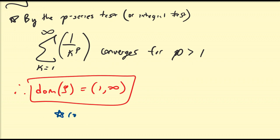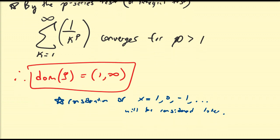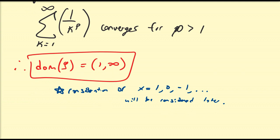Just a quick note: consideration of x equals 1, 0, negative 1, and so on will be considered later. You may be asking why we would consider values where the function isn't defined. This is not an intuitive thing to discuss now, which is why we leave it until later when we discuss different types of summation methods. For now, let's just accept this to be valid.